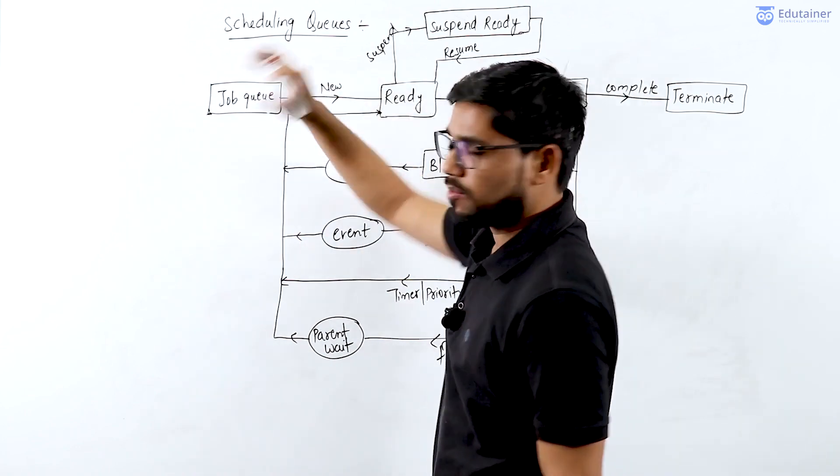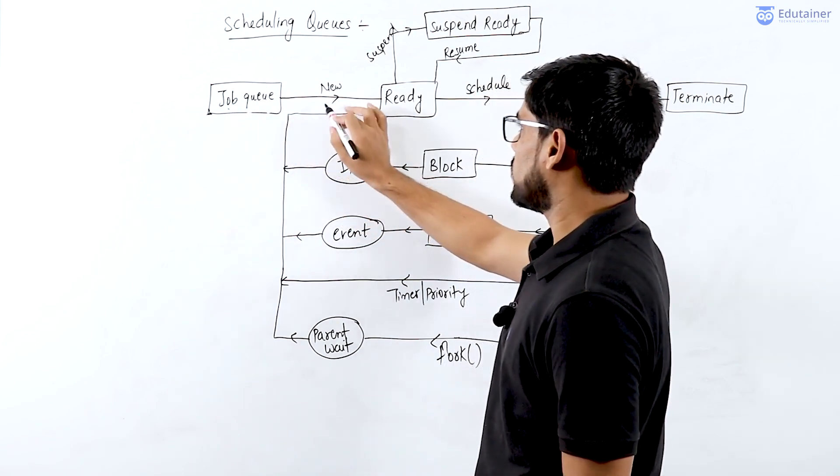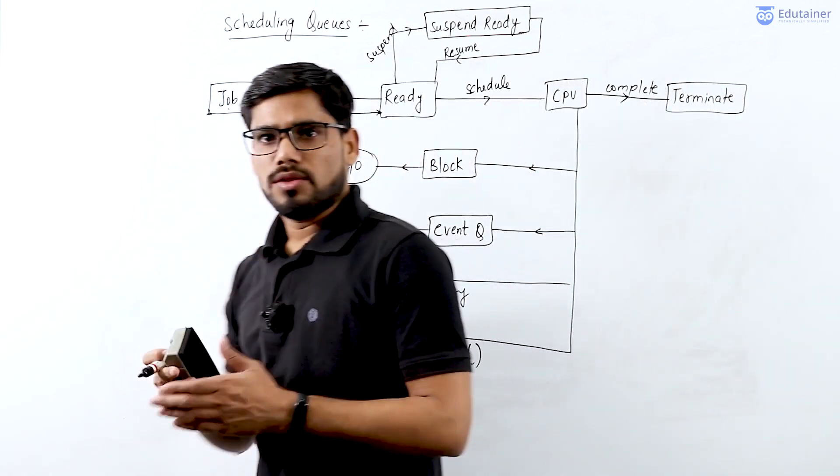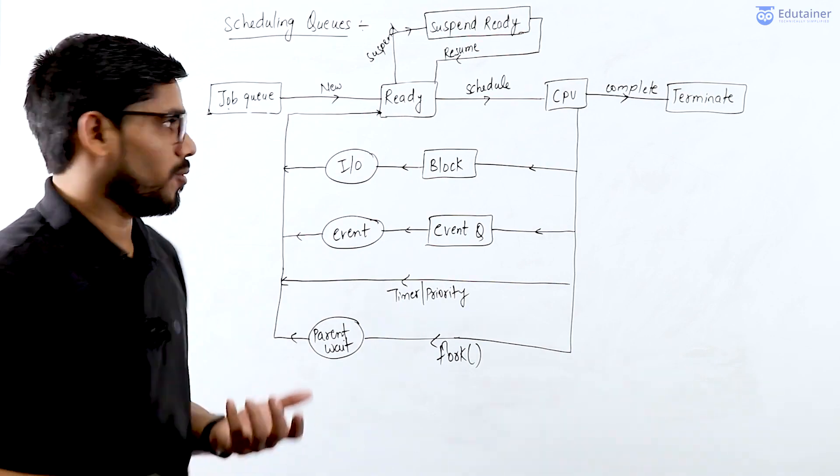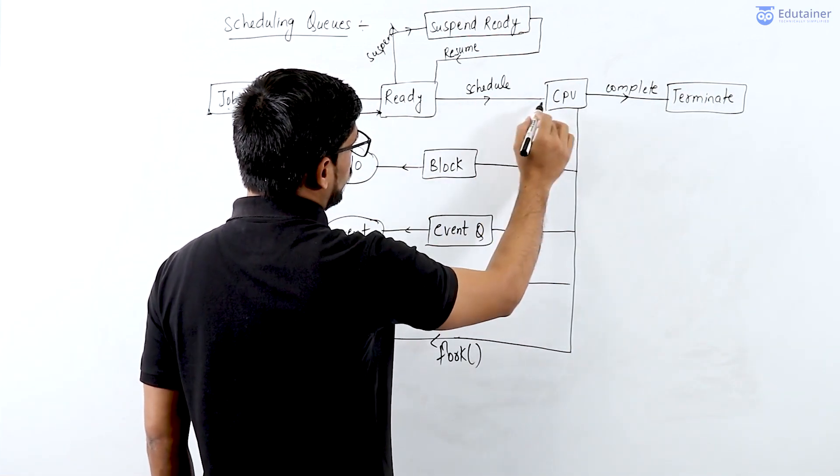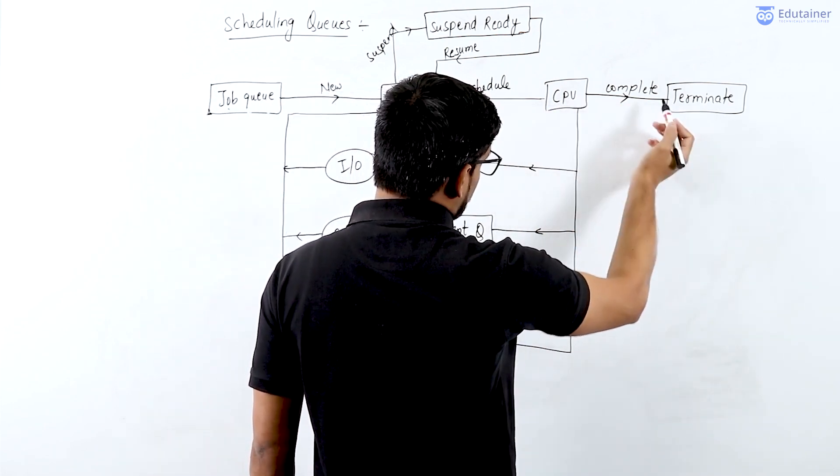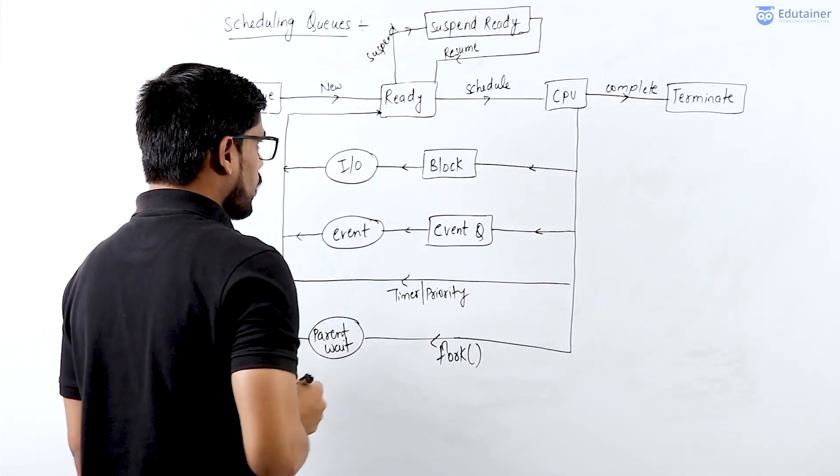When a process is about to be created, it's present in the job queue. When it's created, it goes to the ready queue. The ready queue holds various processes simultaneously, which decides the degree of multi-programming. After that, it's scheduled by the CPU scheduler and given to the CPU. Finally, when it completes its task, it goes to the terminate queue.